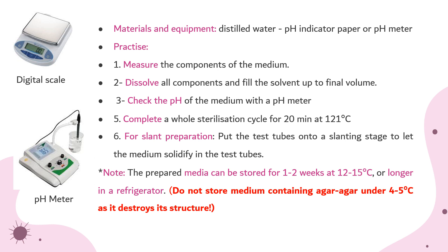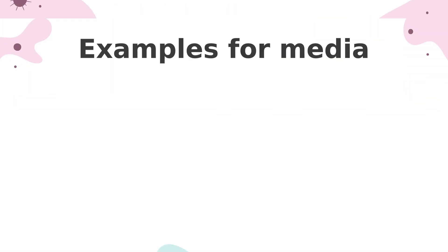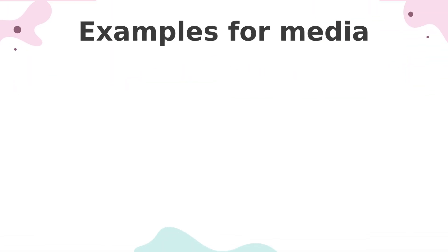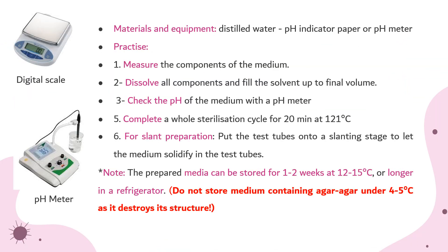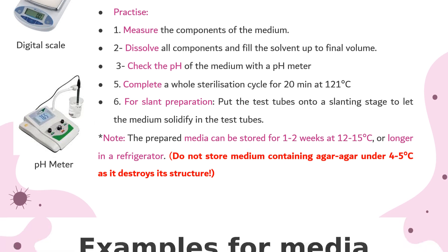For slanted preparation, put the test tubes onto a slanting stage to let the medium solidify. Important note: prepared media can be stored for one to two weeks at 12 to 15 degrees centigrade, or longer in the refrigerator. Do not store media containing agar below 4 to 5 degrees centigrade, as it destroys the agar structure.